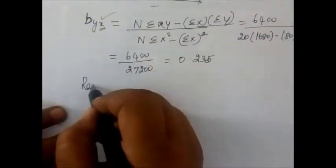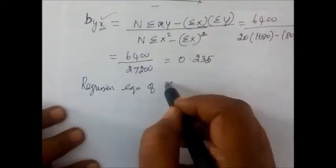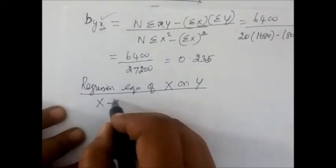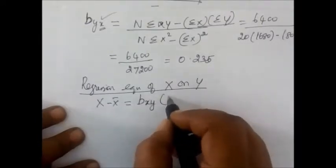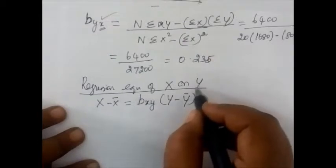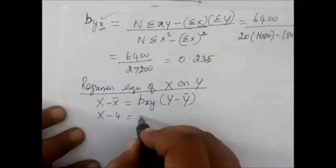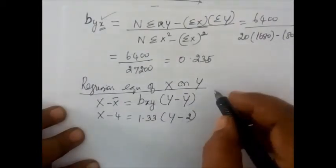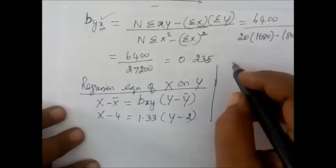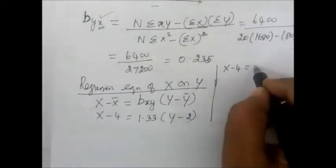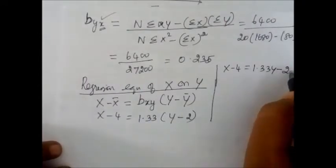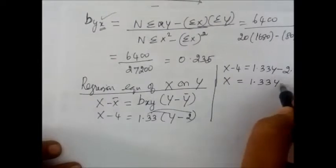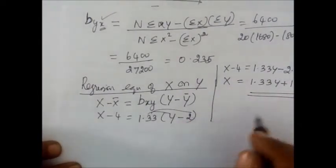First step: Regression equation of x on y. The formula is x minus x̄ equals b_xy times (y minus ȳ). Here x̄ equals 4 and ȳ equals 2. Substituting b_xy equals 1.33 and ȳ equals 2: x minus 4 equals 1.33 times (y minus 2), which gives x minus 4 equals 1.33y minus 2.66. So the first regression equation is x equals 1.33y minus 2.66 plus 4, simplified as the first equation.